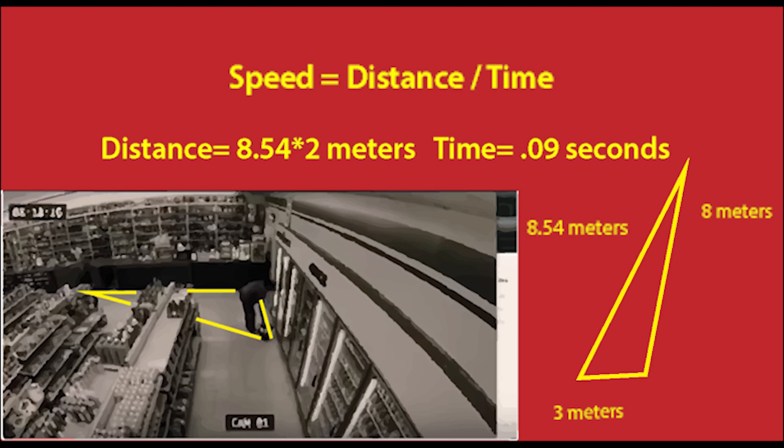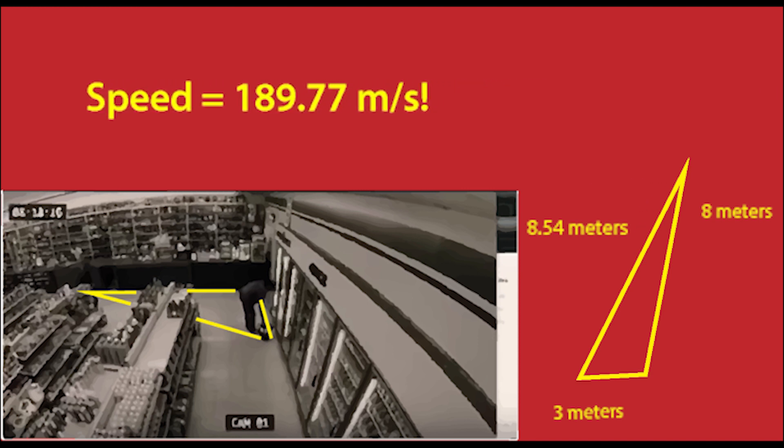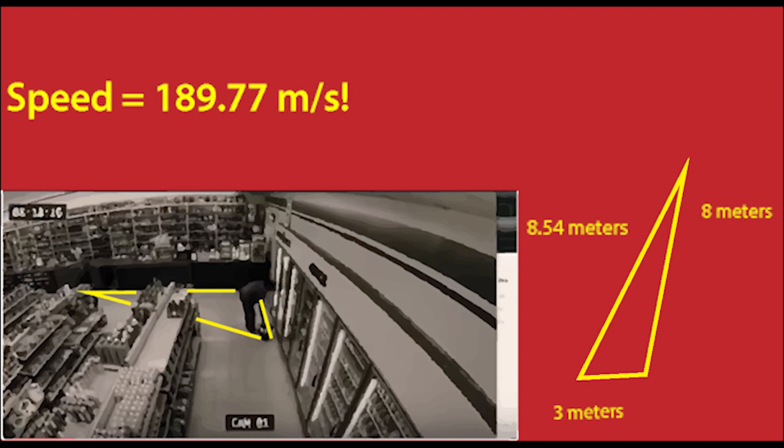Although that seems really fast, it's actually not very fast at all, because Mach 1 is 340.29 meters per second and CW's Flash can run at Mach 3.